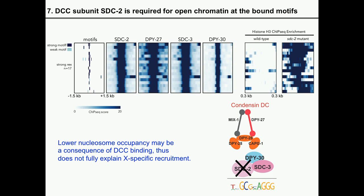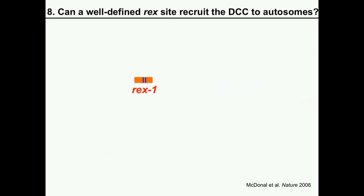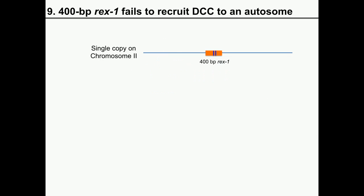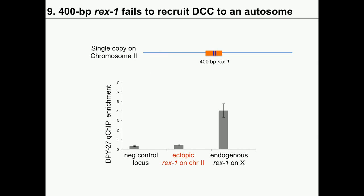We then needed to figure out what factor determines specificity to the X. We asked: can a well-defined REX site recruit the DCC on an autosome? We used a well-defined recruitment site — a 400 base pair DNA element containing two copies of the motif called REX1 — which was shown to recruit the complex on multi-copy extra-chromosomal arrays. We took a single copy of REX1 and inserted it onto chromosome 2. Interestingly, compared to the endogenous site, a single insertion on chromosome 2 was not able to recruit the complex.